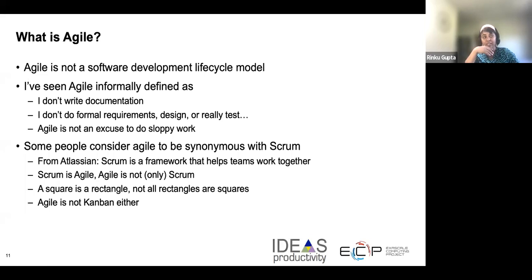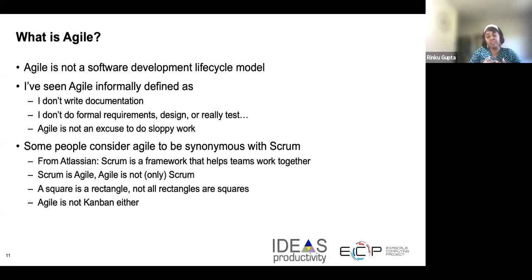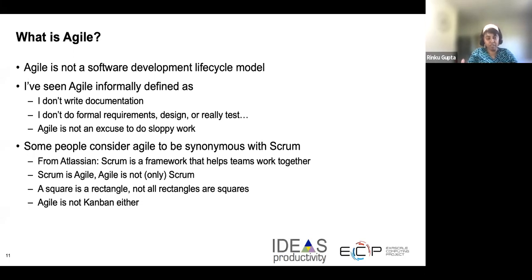Let's talk about what Agile actually is and what it is not. Agile is not a software development lifecycle model — it's not like your traditional waterfall model or an iterative model, and it doesn't have different phases that a conventional SDLC may have. Many times I've seen Agile informally used as an excuse for sloppy work — Agile doesn't mean that you don't write documentation, and that's not acceptable. There are certain people who consider Agile to be synonymous with Scrum. Now Scrum is a framework widely used in enterprise, and it is definitely Agile, but Agile is much more than just Scrum. There are other Agile methods that exist and Scrum is just one of them.